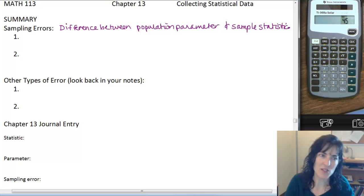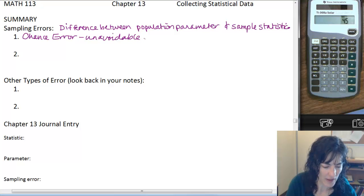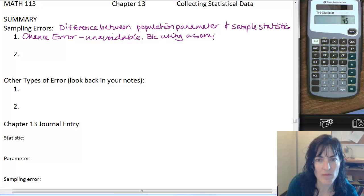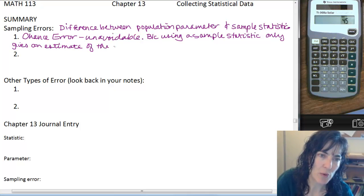And we want to know what caused it. So it could be a chance error, and that's unavoidable. And it's because we're using a sample only gives an estimate of the population parameter.